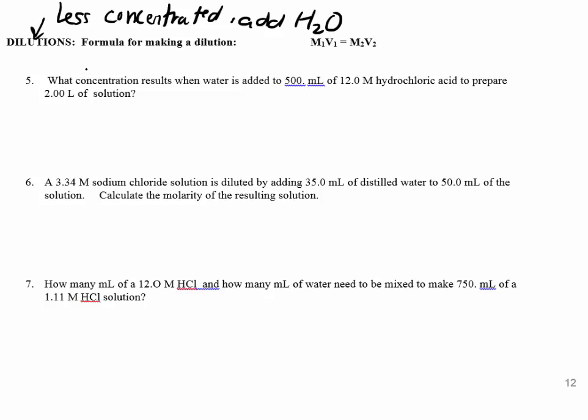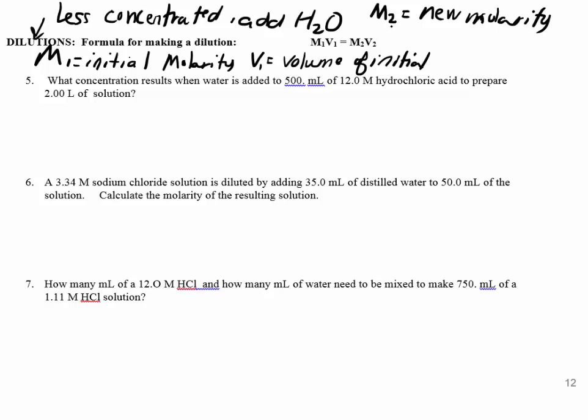Dilute it down means add some water. So look at what we have. M1 just means your initial. So M1 is your initial molarity. V1 is volume of the initial. You have to make sure your 1s go together and your 2s. So then M2 is your new molarity. So if you notice, something's changing. That's how I know when to use my formulas. And V2 then is your new total volume.